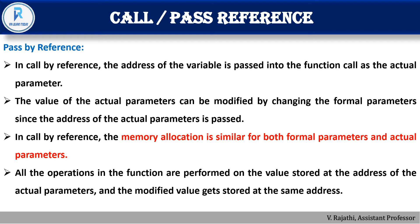In call by reference, both formal and actual parameters share the same memory location. So all operations performed in the function are performed on the value stored at the same address. Because they share the same memory, any changes made inside the function will be reflected in the original variable.